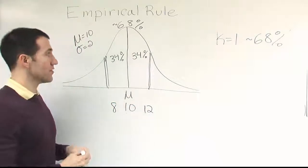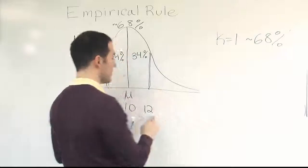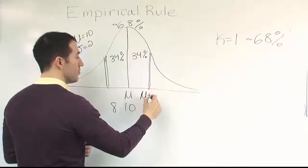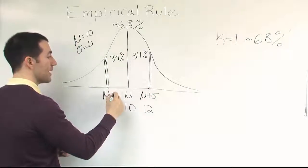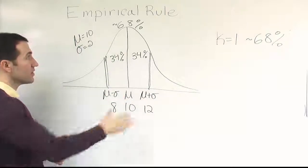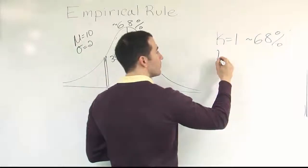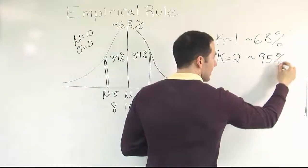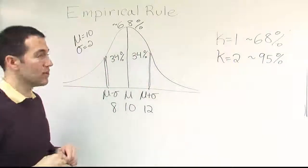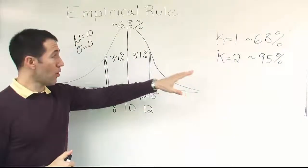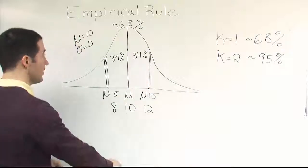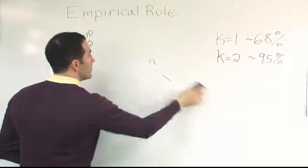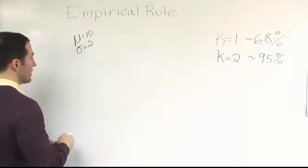That's one standard deviation when k is 1. Remember, k represents the number of standard deviations above and below the mean used. Let's look at another drawing for when k is 2. When k equals 2, we capture approximately 95% of the data. That's a lot of the data, almost everybody. Just 5% lies outside of that interval.